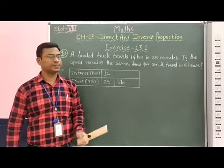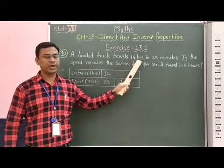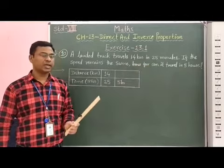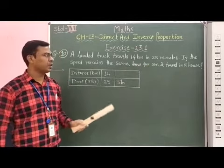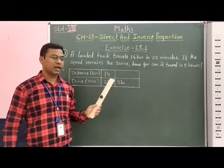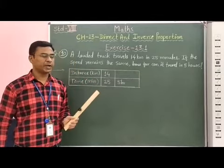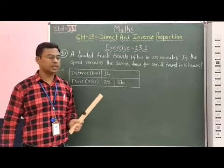Students, in this question, it is given that a truck travels 14 km in 25 minutes. Then here we have to find out how many distance travel by the truck in 5 hours, if the speed of the truck remains the same.